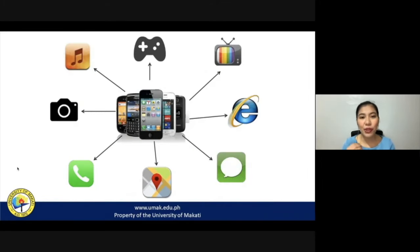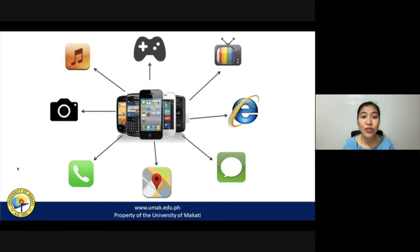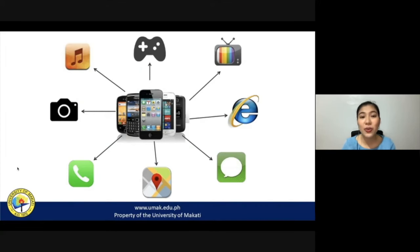One great example of media convergence is the smartphone. Before, with a cell phone, you could only do texting or calling. But right now, with smartphones, you can play games, watch shows, browse the internet, send messages, call someone, use it as your map, as a camera, or even as an audio or listening device.